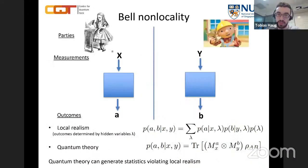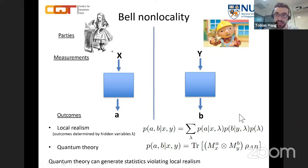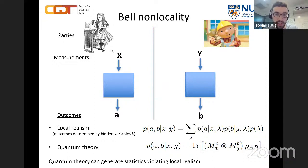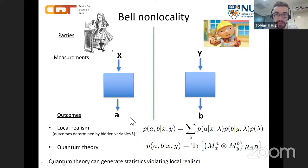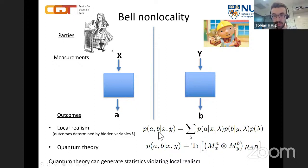Now we apply these concepts to Bell non-locality. The basic idea is that you have two parties, Alice and Bob, who share a quantum state — each holds one part. They are spatially separated and cannot communicate directly. They perform random measurements: Alice performs measurement X, Bob performs measurement Y, and they obtain outcomes A and B. After many rounds, they calculate the statistics — the probabilities of getting outcomes A and B given measurements X and Y.